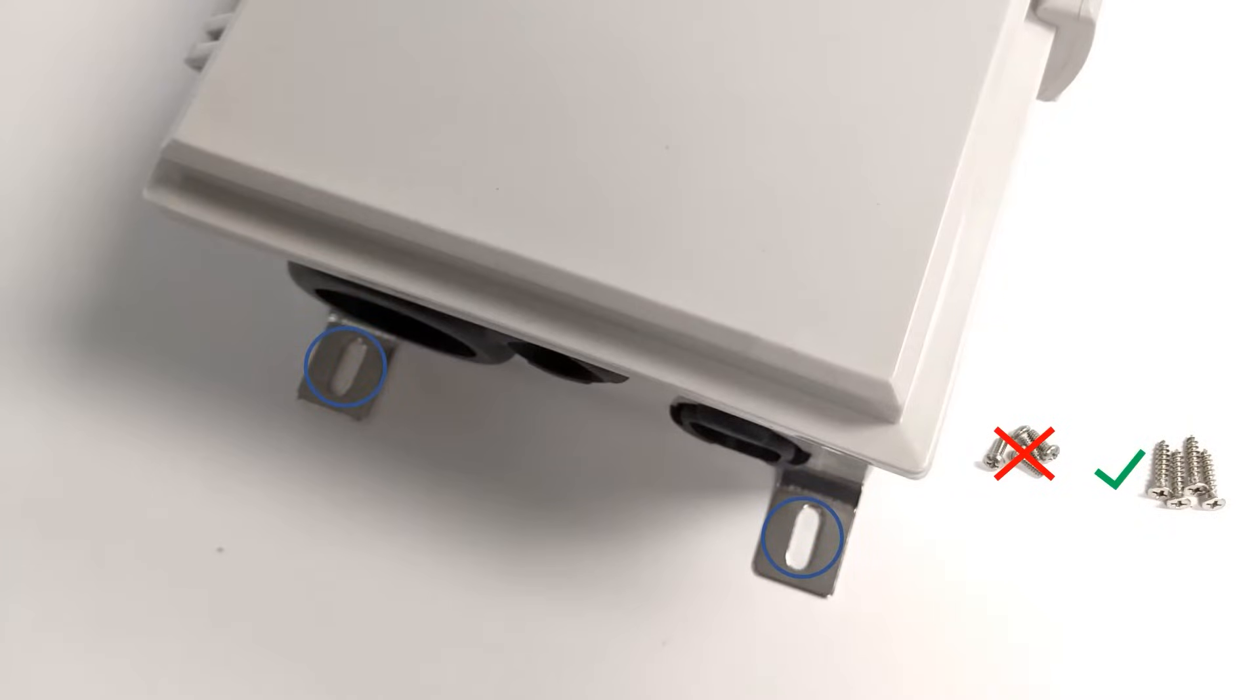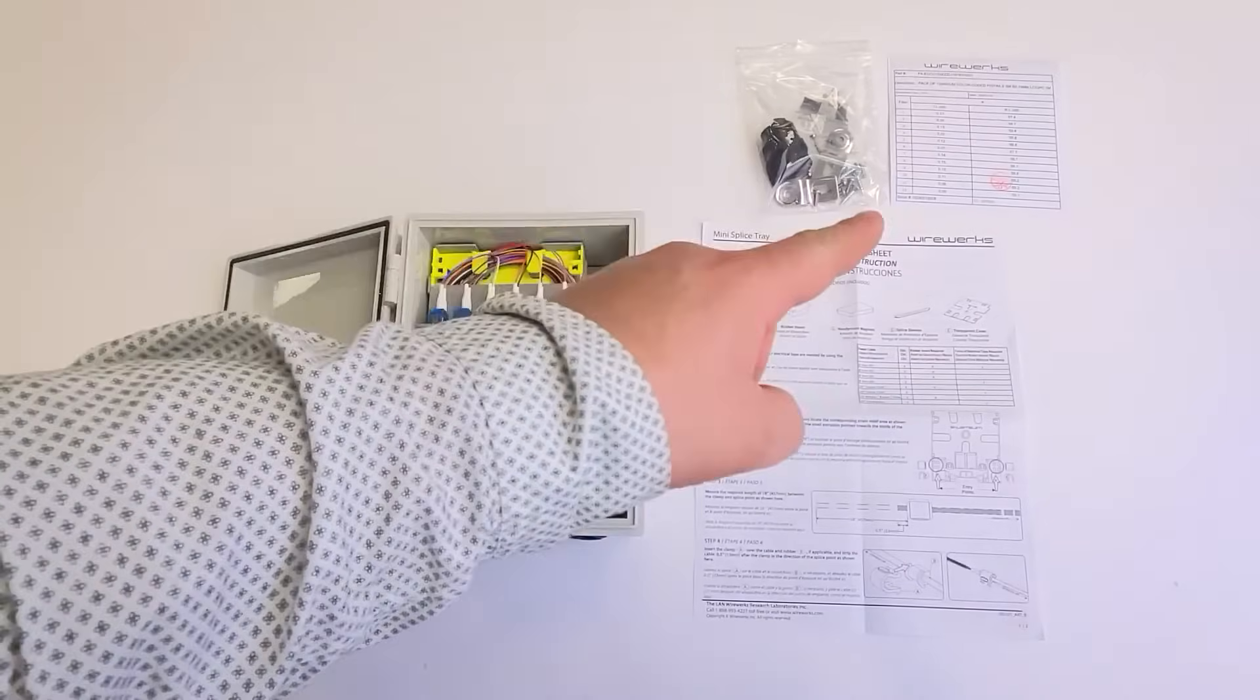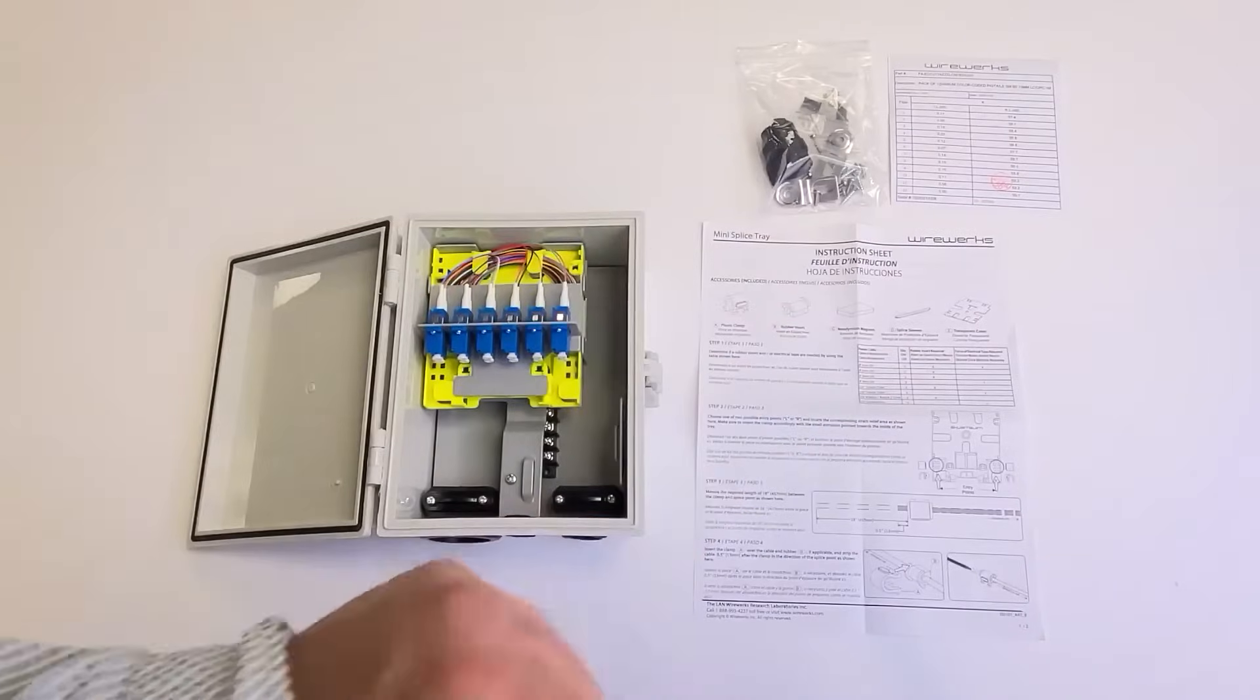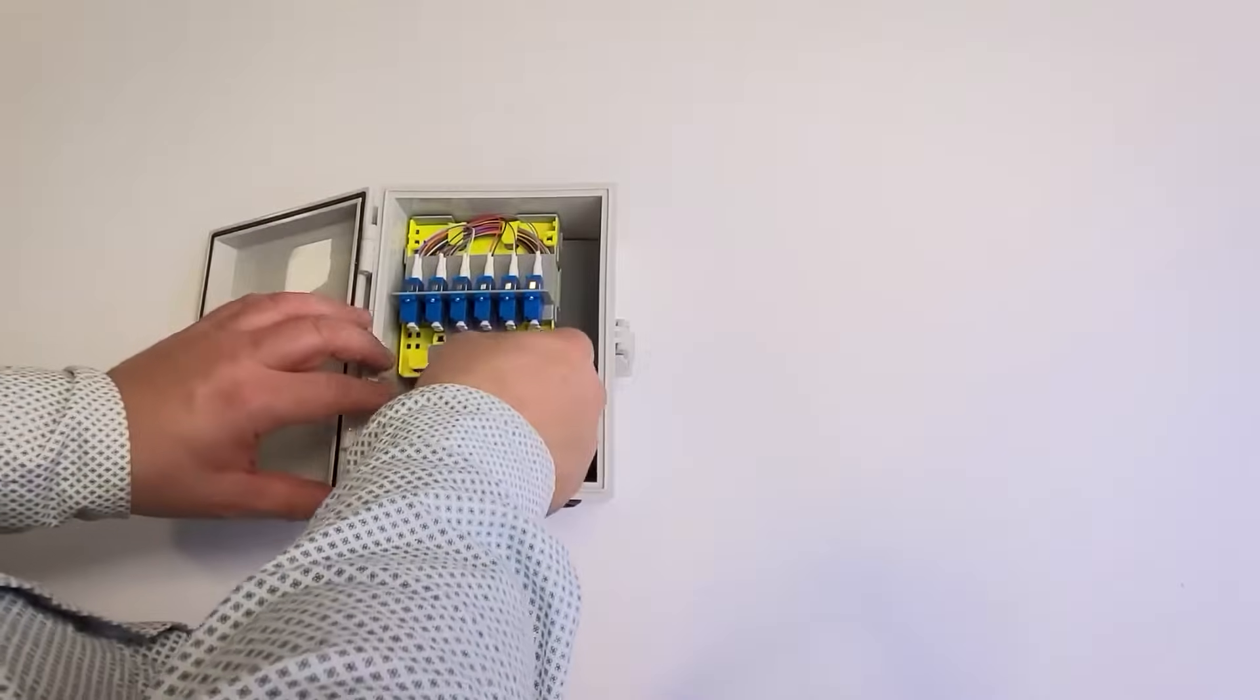Every hybrid enclosure comes with a hardware kit, test results, and an installation sheet. Now let's proceed with the installation. First, remove the adapter strip assembly together with the mini splice tray.